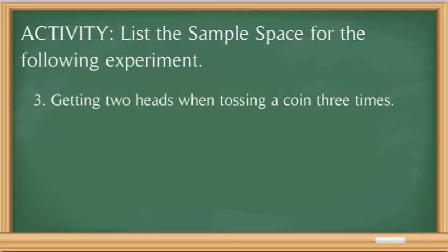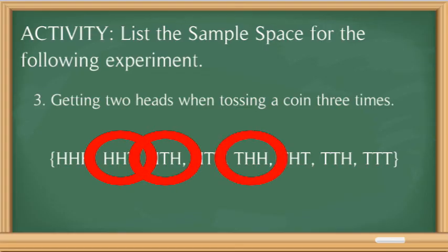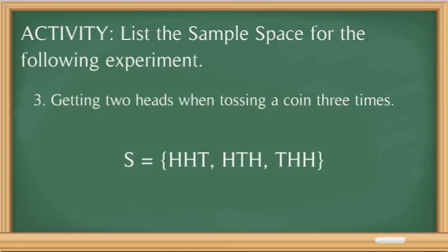Number 3: getting 2 heads when tossing a coin 3 times. The sample space when tossing a coin 3 times is: HHH, HHT, HTH, HTT, THH, THT, TTH, and TTT. What is asked is getting 2 heads, so the outcomes with two heads are HHT, HTH, and THH. Which means {HHT, HTH, THH} is our sample space of getting two heads when tossing a coin three times.